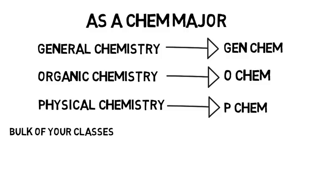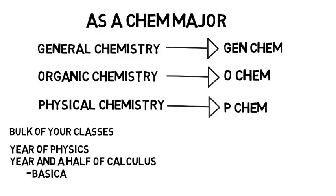On top of these, chem majors will have to take about a year of physics and a year and a half of calculus, which is basically identical to what engineers have to do as well, which is why I emphasized how much math and problem solving there is.